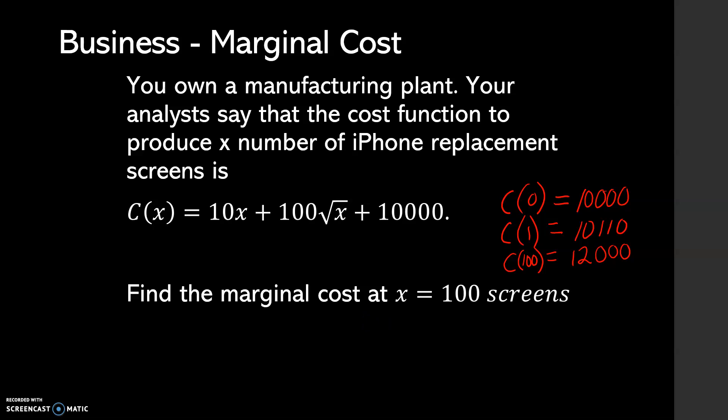Today's vocabulary lesson: we want to know what marginal cost means. Marginal cost can be thought of as the cost to make the next screen, and that's a rate of change. So what this is asking — find the marginal cost at x equals 100 screens — is how much more does it cost to make the 101st screen? And we can do that using calculus.